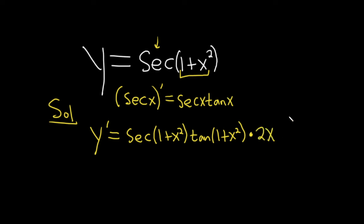You take the derivative of the outside, leave the inside alone, and then times the derivative of the inside. And then y prime is equal to—let's put this in the front—2x secant of 1 plus x squared.